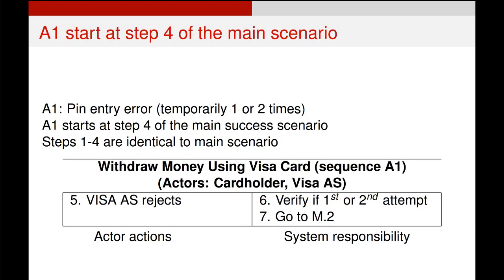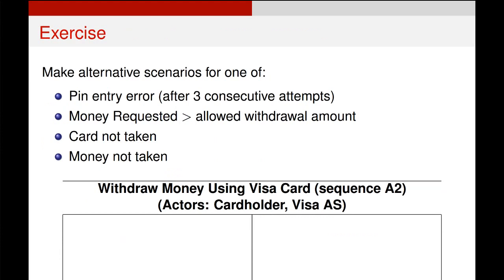There are simpler ways of writing this because our first four steps are identical to the main scenario. More often than not you'll just see it laid out starting from that point where it diverges from our main success scenario. Here are a few other examples — go through, stop the video, and make your own alternative scenario for one of these on the screen.